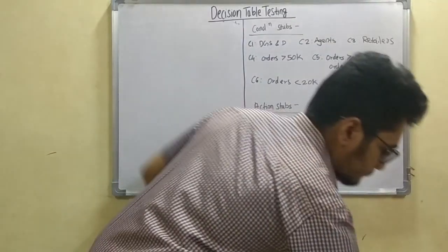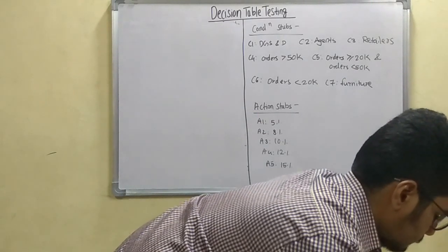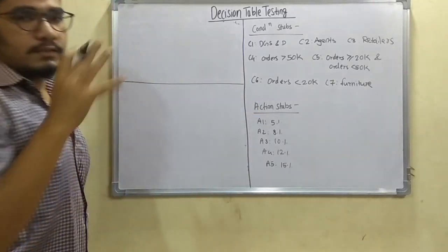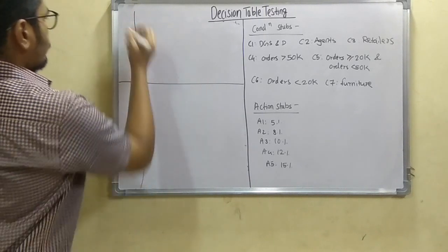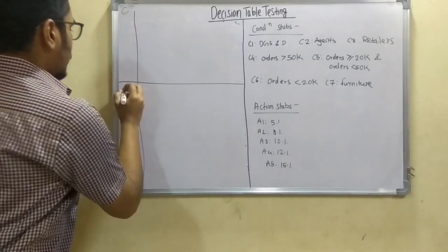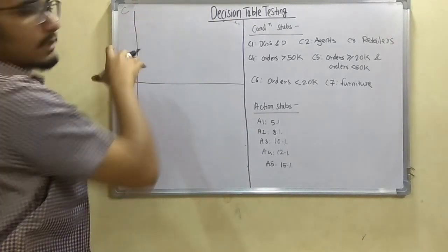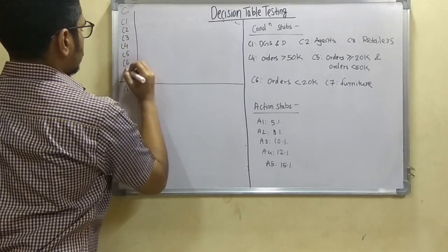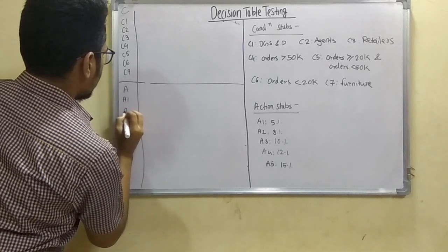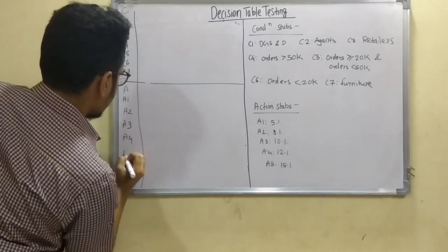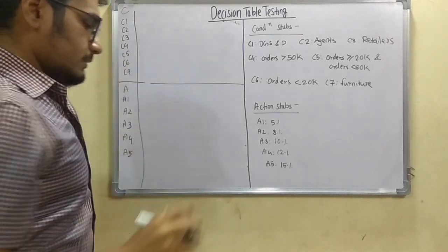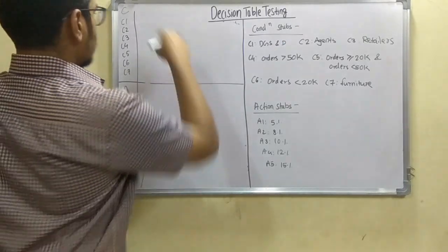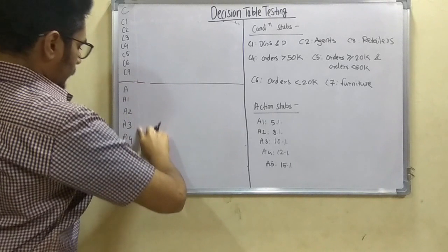So let's get started designing the table. After the table we get output results that we map to design the test cases. The table is bifurcated into two parts: conditions (C) and action steps (A). We write conditions C1 through C7 and actions A1 through A5. Next we have to design the rules for this table.